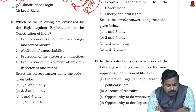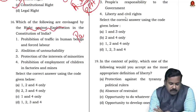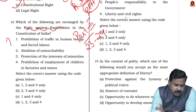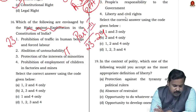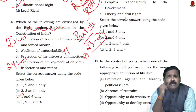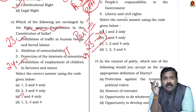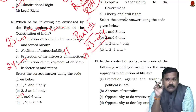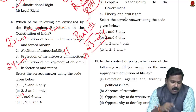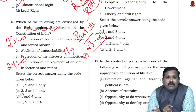Question 16: Which rights are envisaged by the Right against Exploitation? This chapter covers Articles 23 and 24. Article 23 prohibits trafficking in human beings and forced labor; Article 24 prohibits child labor. Article 17 (abolition of untouchability) falls under Right to Equality (Articles 14–18), not Right against Exploitation, because untouchability is specific to scheduled castes and tribes, whereas Articles 23 and 24 apply to everyone. Article 29 covers protection of interests of minorities under cultural and educational rights. So the answer is Articles 23 and 24.